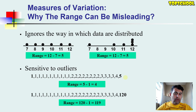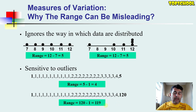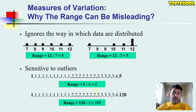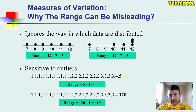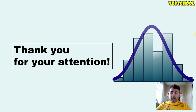The second reason is that the range is sensitive to outliers. For instance, we have data one, two, three, four, five — the range is five minus one, which is four. But in the next case, if instead of five we have 120 as an outlier, then the range becomes 120 minus 1 equals 119. Despite having the same number of data points, one outlier dramatically changes the range. Outliers affect our range.